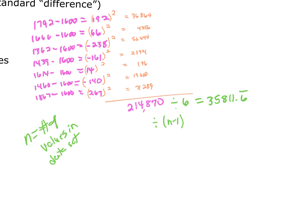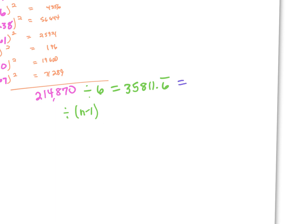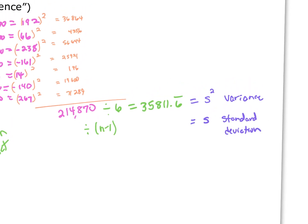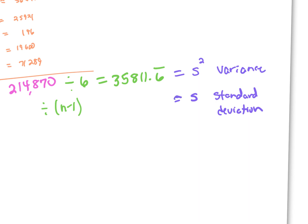There's a special name for this that you need to be aware of: once you've done that division, this is referred to as s squared — that's the variance. You need to know that term. S squared is the variance. To get the standard deviation, we take the square root of that value, so the standard deviation for this set is approximately 189.2.